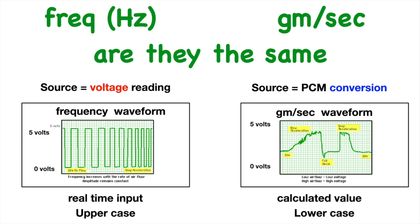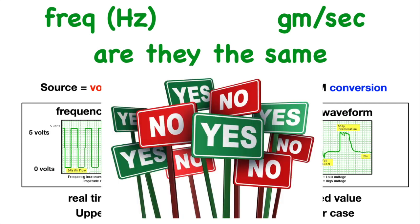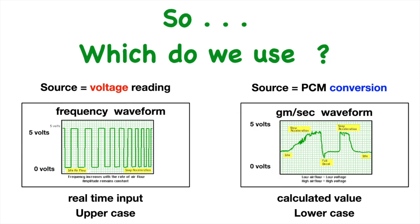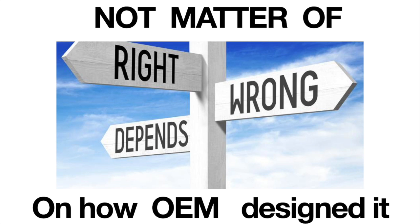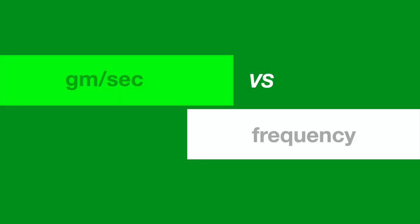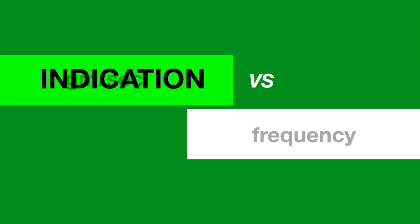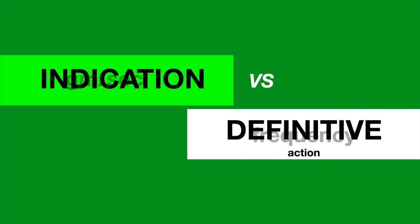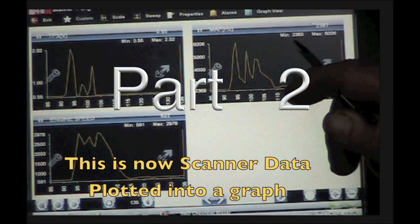Frequency and grams per second — are they the same? Well, yes and no. Which do we use? It is not a matter of right or wrong; it depends on how the OEM designed it. When talking about grams per second versus frequency, grams per second is more of an indication, whereas frequency is a definitive action. In part two, we'll discuss the actual testing of the mass airflow.